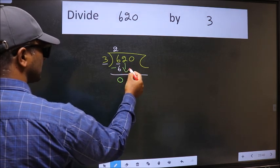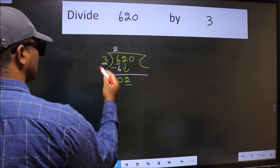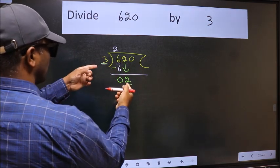After this, bring down the beside number. So, 2 down. Now, here we have 2 and here 3. 2 is smaller than 3.